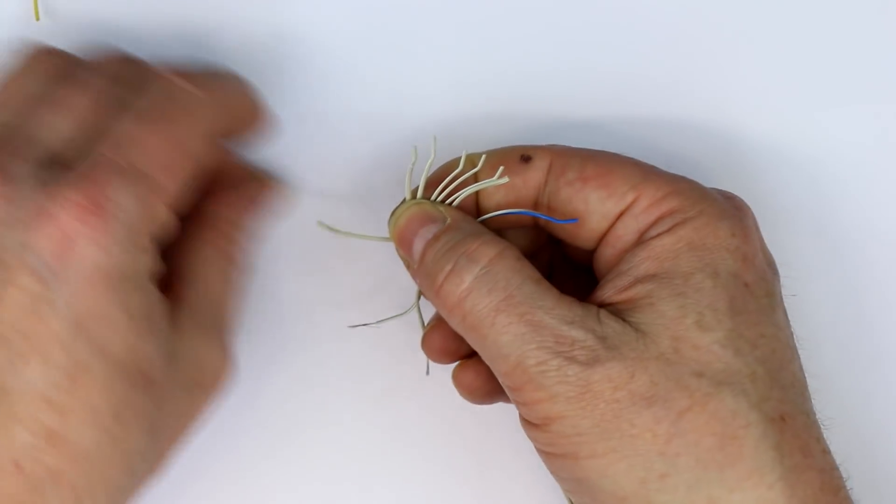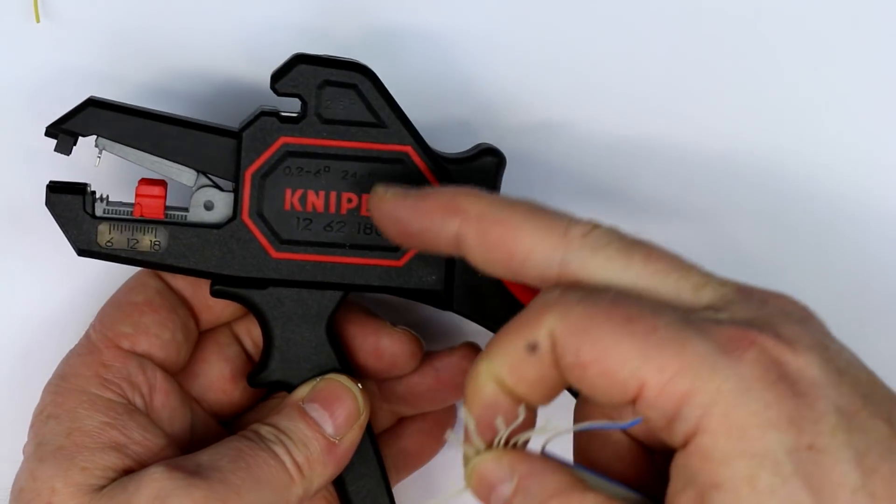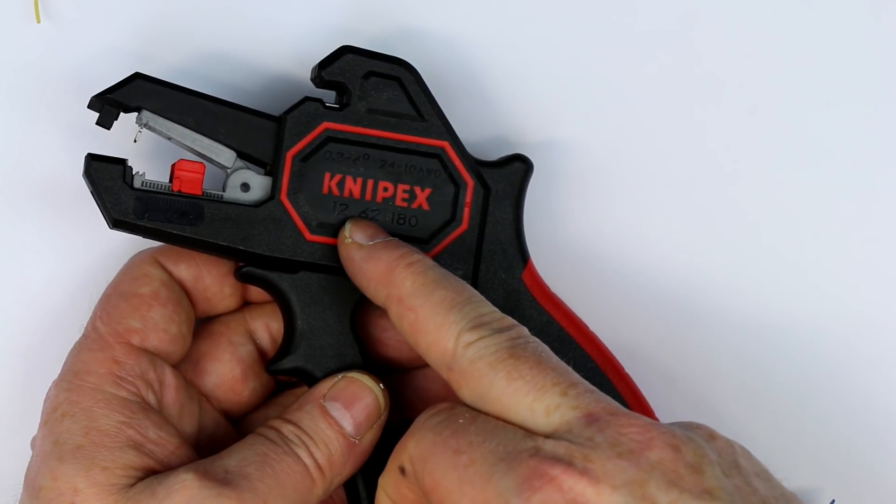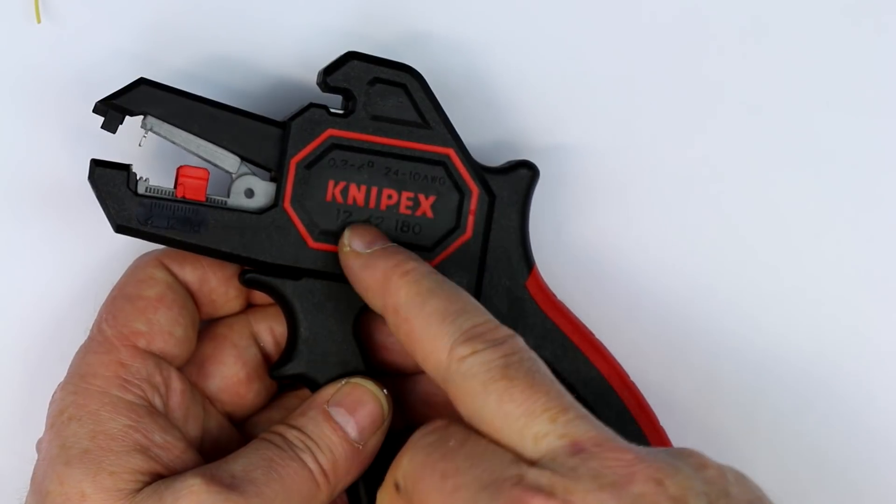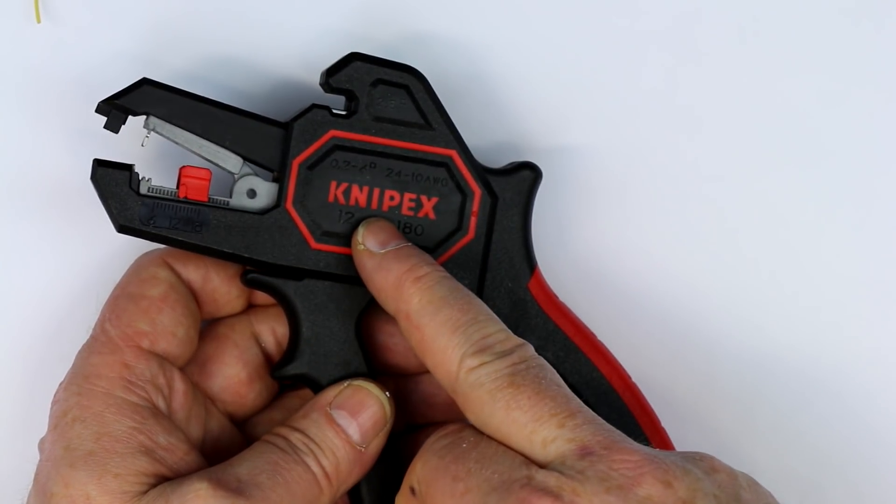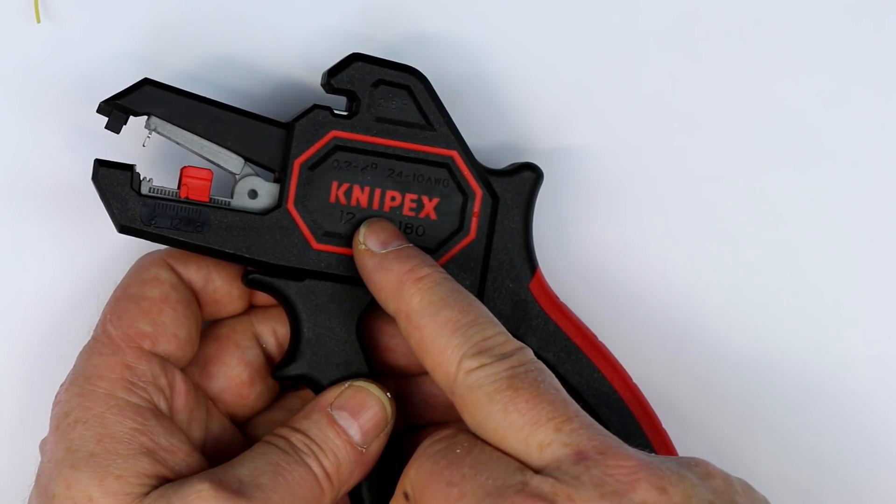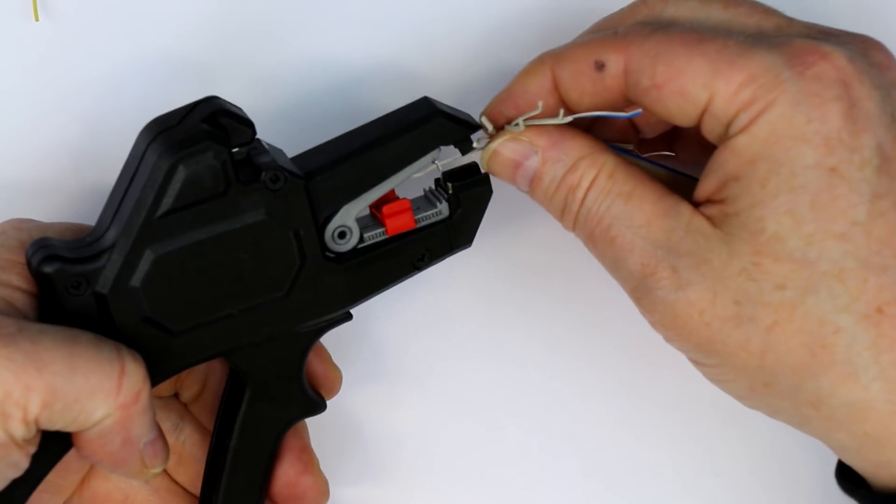Now again. By the way, one of the viewers commented that this is, although Nipex is of course an OEM, an original equipment manufacturer, this seems to be a rebranded stripping tool from another German manufacturer. So quite interesting.